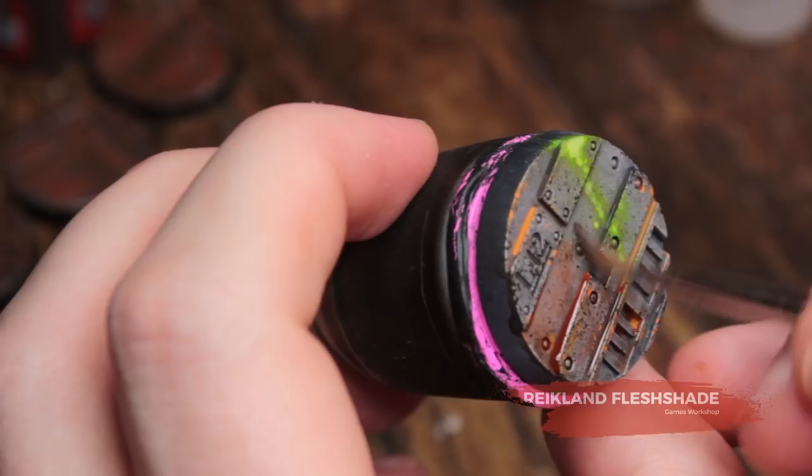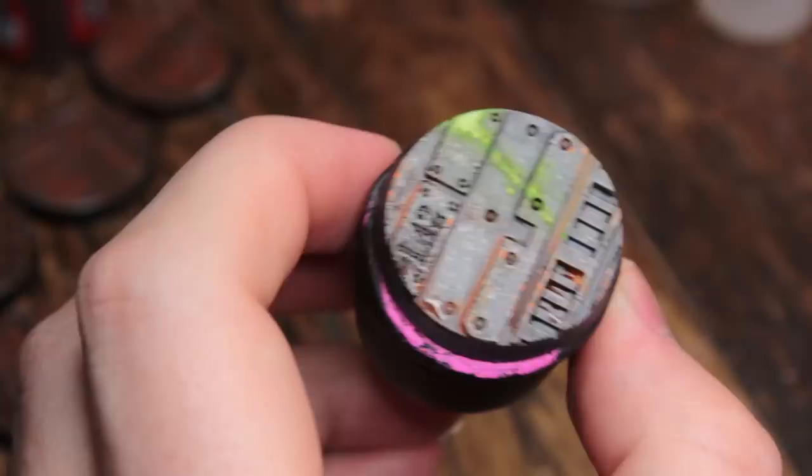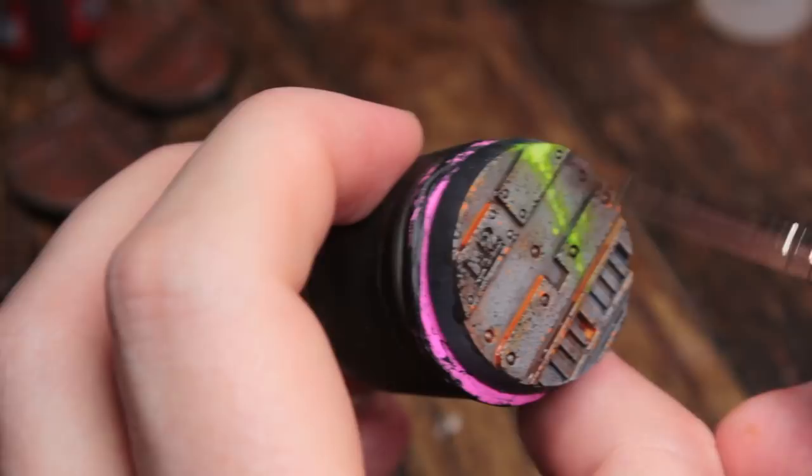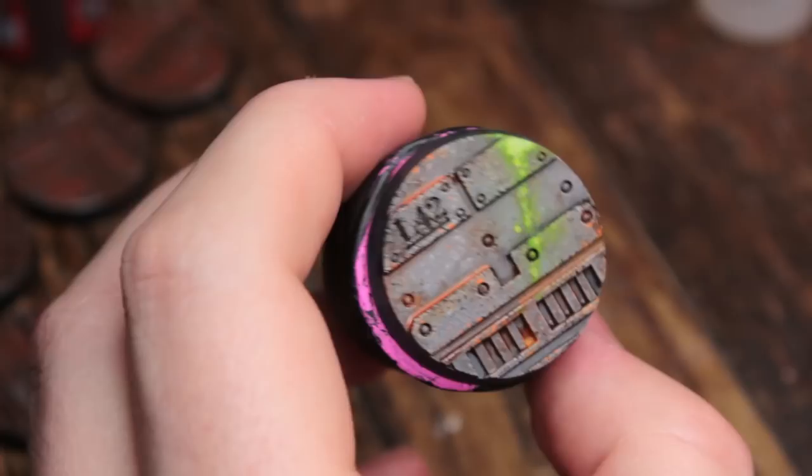Now we're going to take some Reikland Fleshshade. We're actually going to wash this over almost the entire model. We're going to steer clear of the toxic sludge area and we're just going to make sure that it's not quite as heavy on the flat surfaces. And it's mostly just in the crevices. Again, using a clean brush to just get it out of areas where I don't want it.